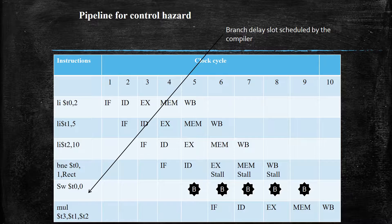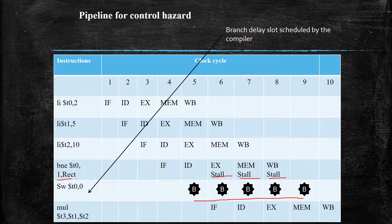The three stalls are: execution stall, memory stall, and write back stall. A complete stall is introduced into the instruction stream, which is why it takes 10 cycles to complete this instruction. But when using MARS simulator for the BNE statement, an extra one cycle is added, so it takes 11 cycles to complete the entire code.